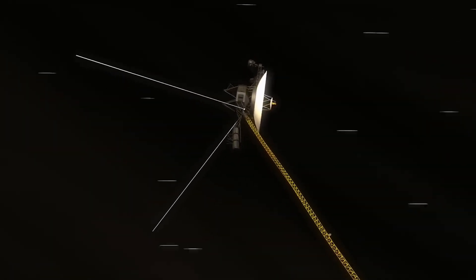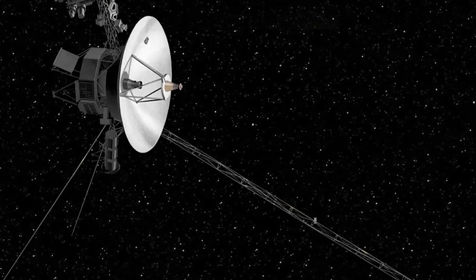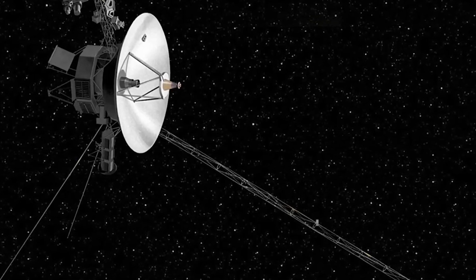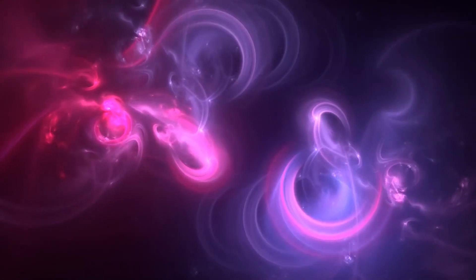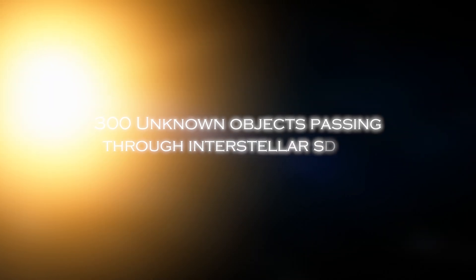Despite this, a fascinating discovery recently emerged in the midst of the data stream. Voyager 1 detected an intriguing anomaly: the presence of 300 unknown objects passing through interstellar space.